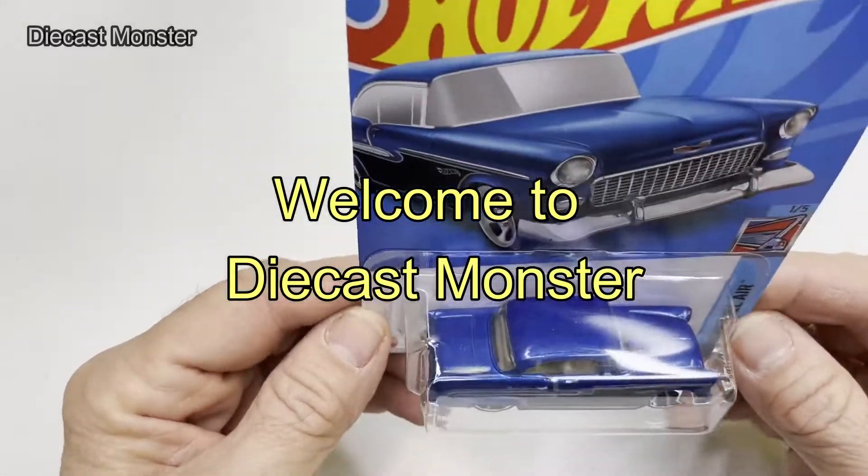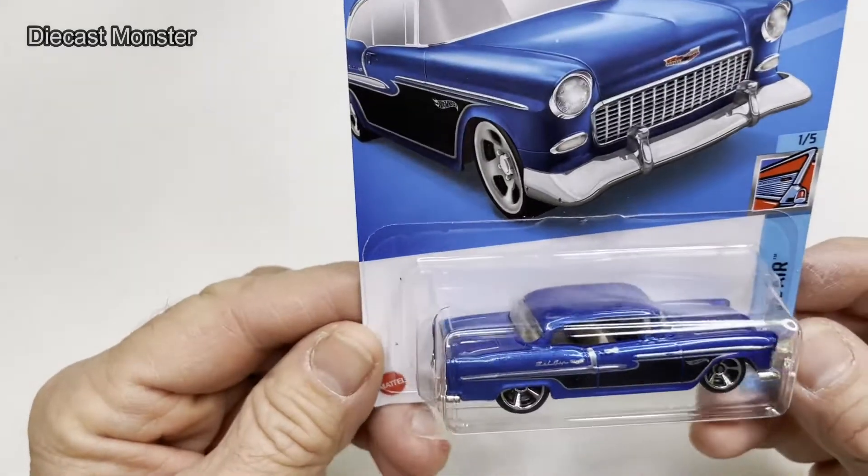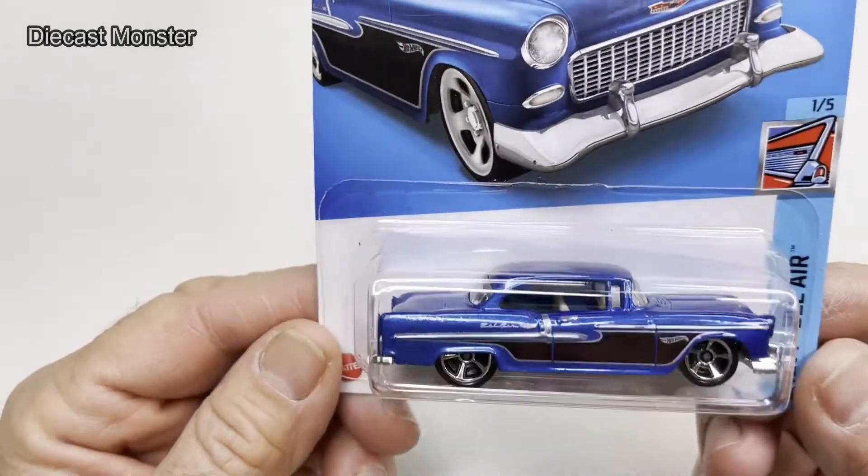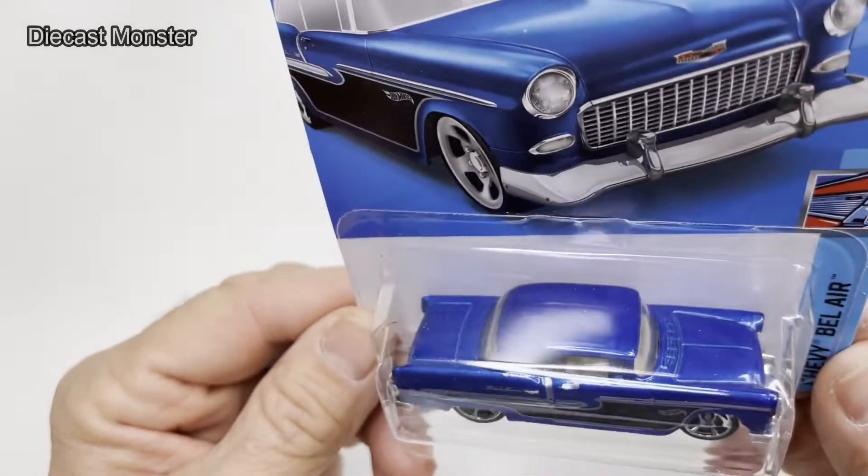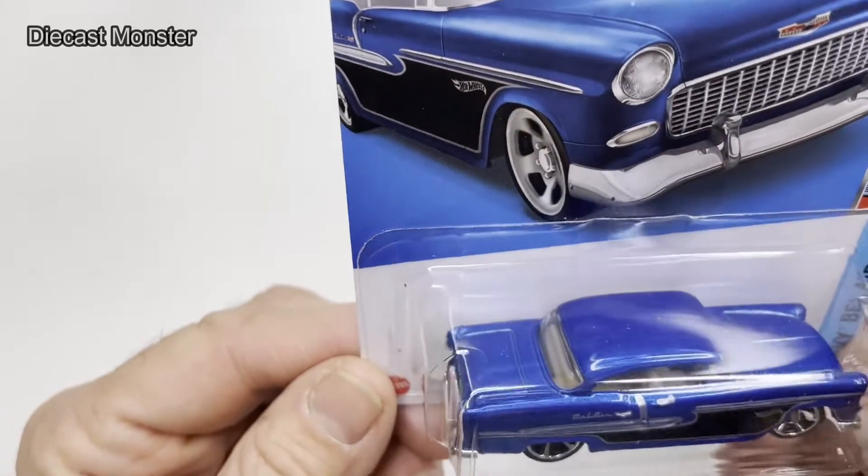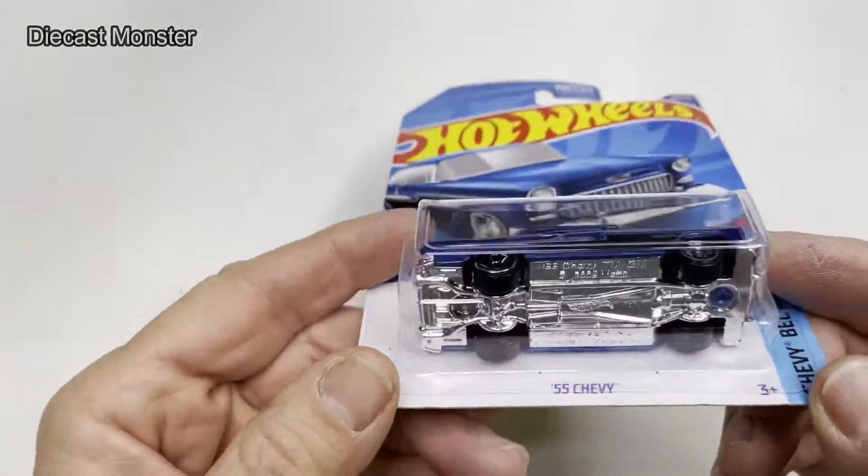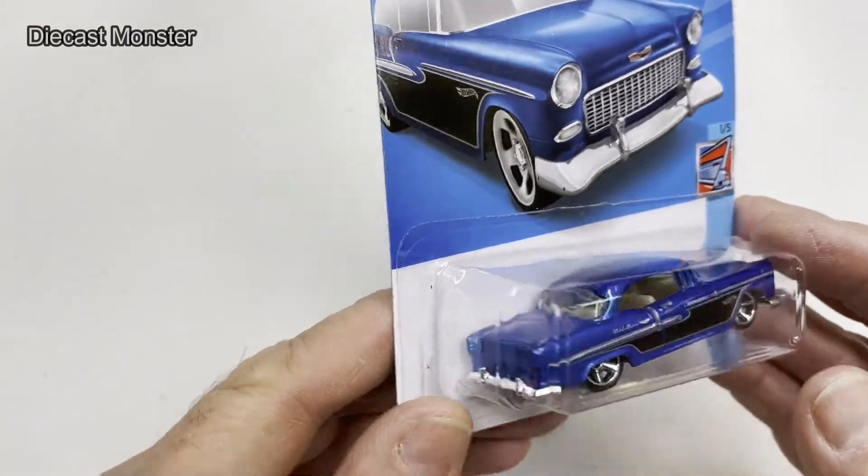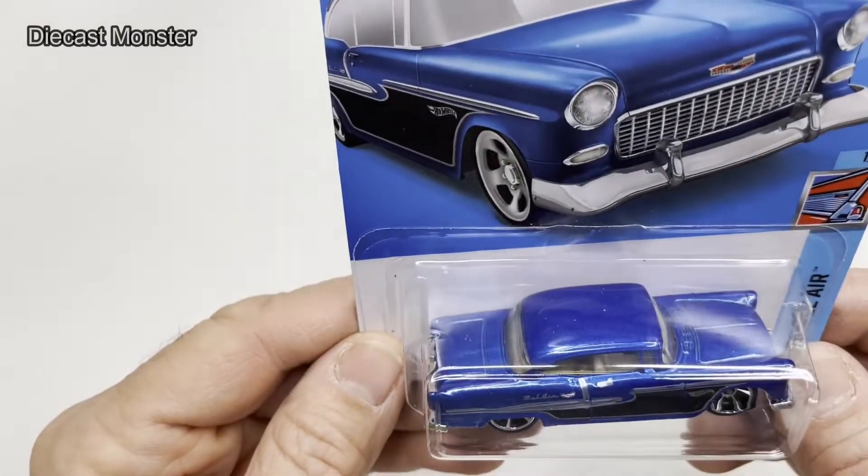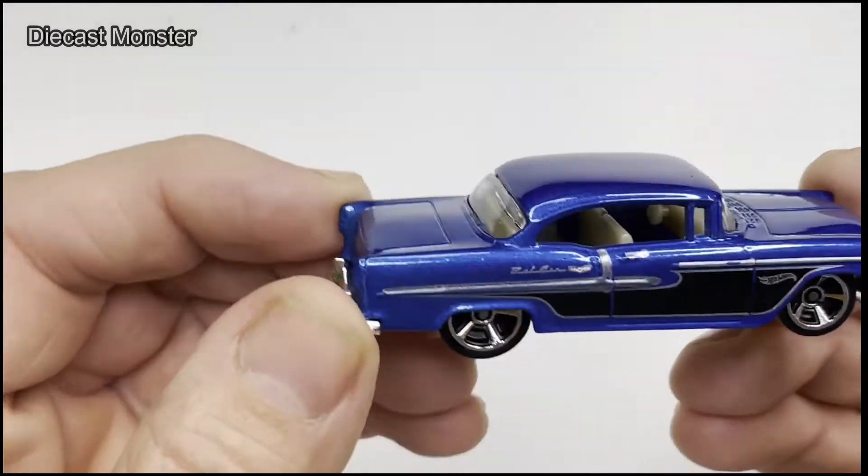Hey guys, welcome back to Diecast Monster. Today I want to swap wheels on this '55 Chevy. I'm not going to take the paint off or anything because I love the way this paint is, it's a gorgeous color. I don't like the interior that much, the color of it, so I'm going to paint that black and paint the bottom black while still keeping the chrome bumpers. So let's get started.